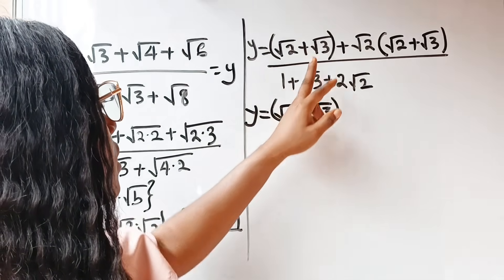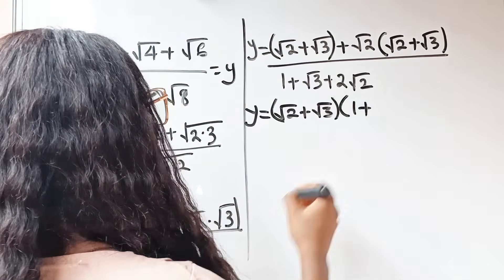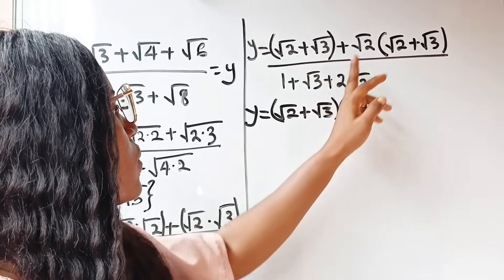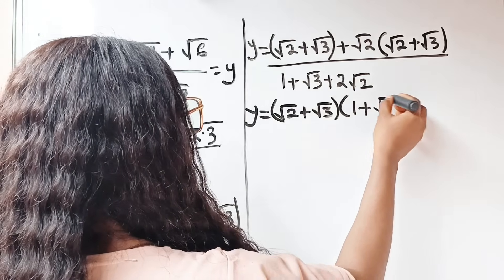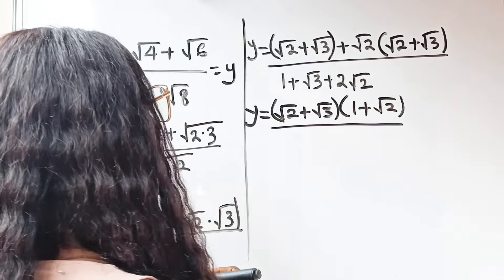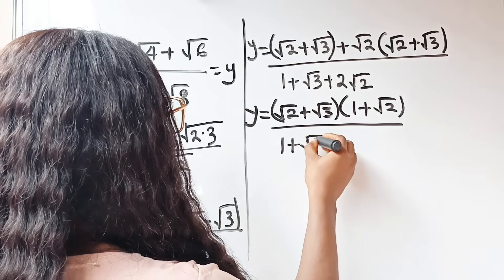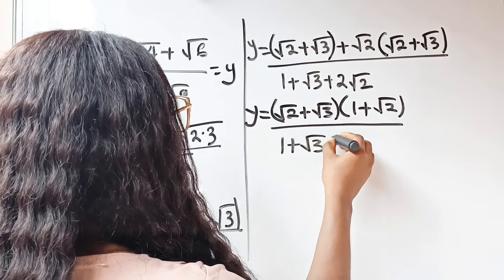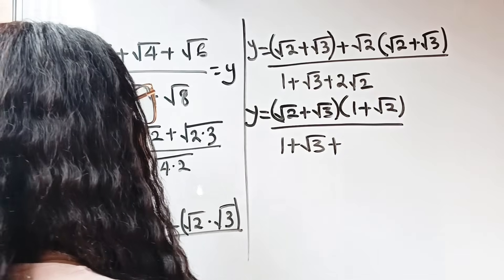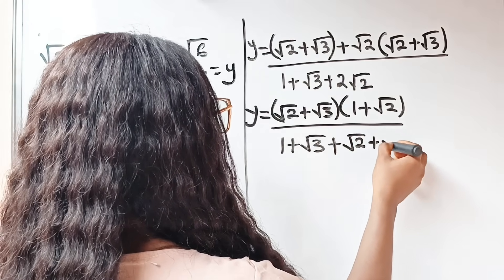When this is divided by this, we have 1 plus root 2 remaining, divided by 1 plus root 3 plus 2 root 2. Note that 2 root 2 is the same thing as root 2 plus root 2, because 2 times any number is that number added to itself — for example, 2×3 = 6 and 3+3 = 6.